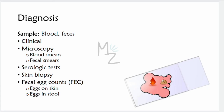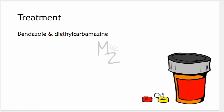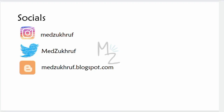Treatment for intestinal nematodes is benzimidazole, though other drugs may also be used, and in some cases no drug is needed. For tissue nematodes, diethylcarbamazine is the primary treatment, and benzimidazole may also be prescribed alongside other drugs. Gradual extraction of the worm can also be performed for some tissue nematodes.